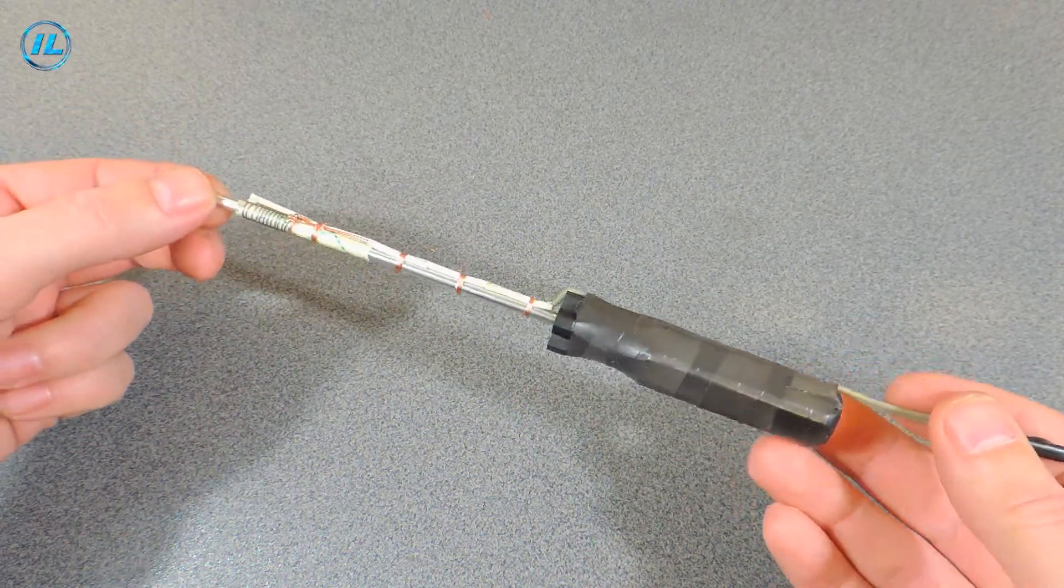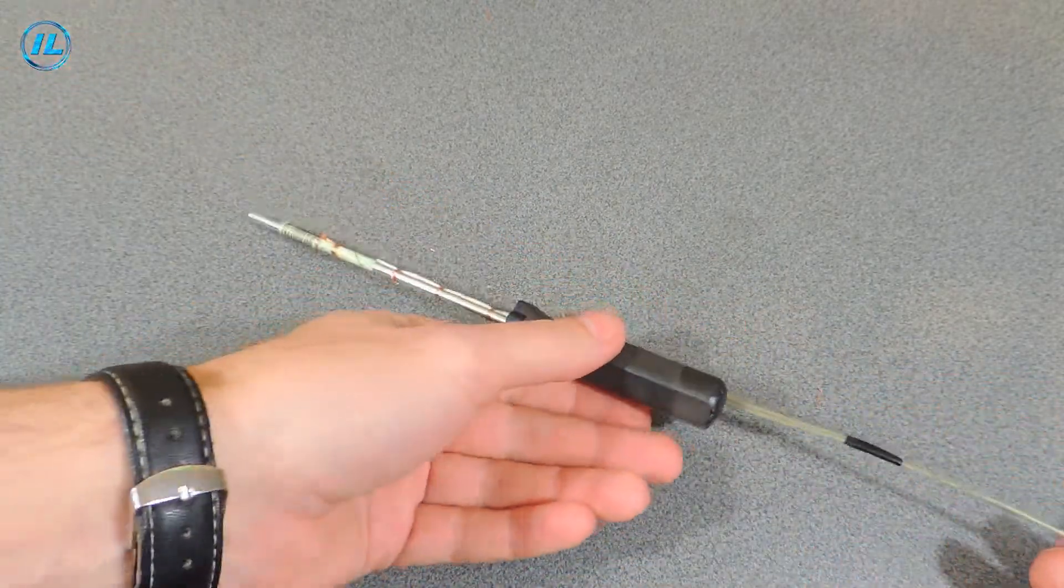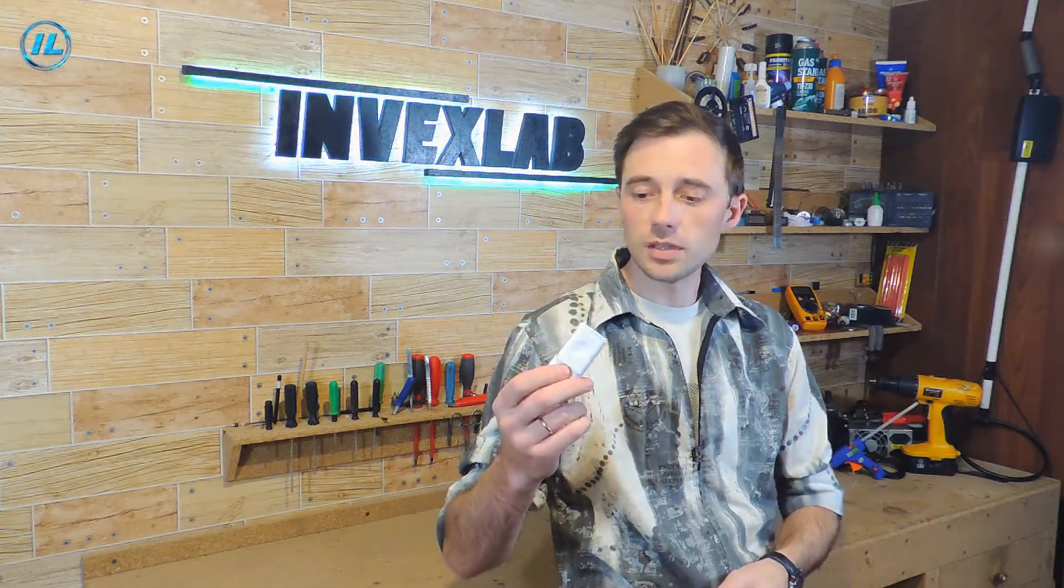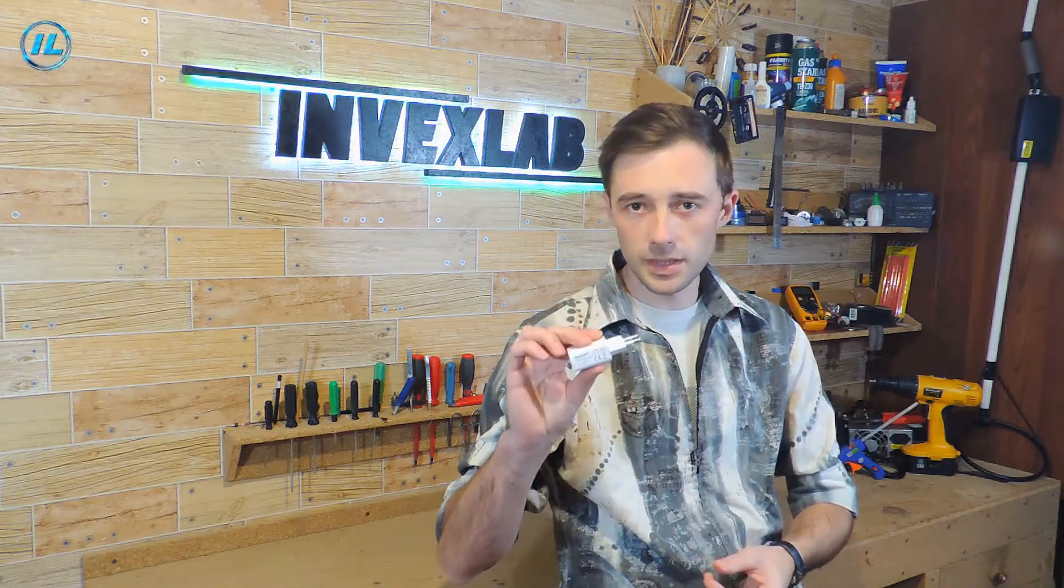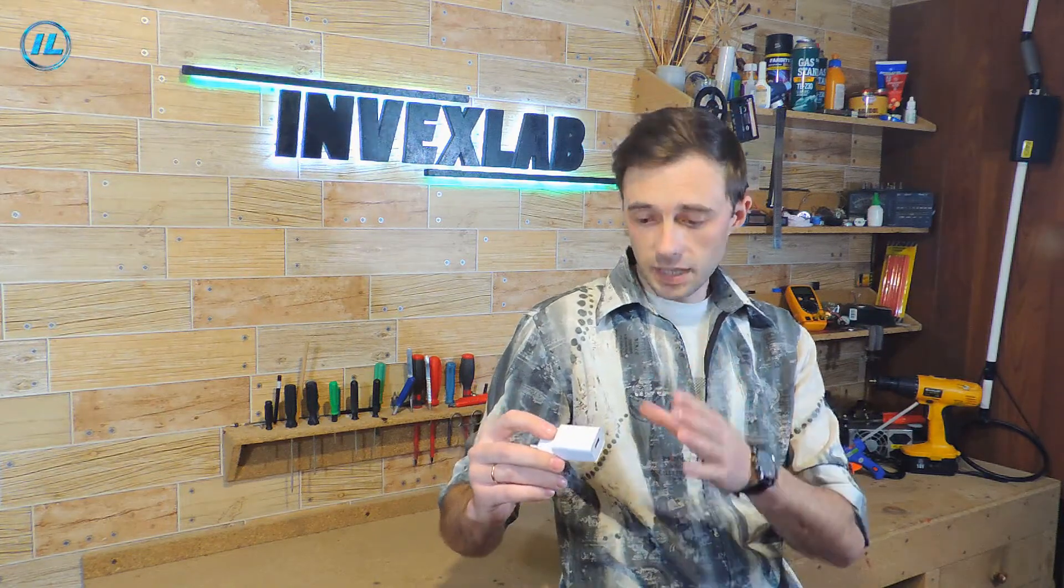Now I'll plug it into the charger and see what it can do. Important point: for the soldering iron to work well, the charger must produce at least 1.5 amps. Many chargers have a current of 1 ampere. This may not be enough for the soldering iron to warm up to the desired temperature. Therefore, the charger should give 1.5 amps.